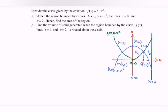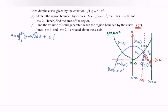Now for part B: find the volume of the solid generated when the region bounded by the curve f(x), the line x equals to 1 and x equals to 2, is rotated about the x-axis. We focus on the blue curve f(x) = 2 minus x squared. We have two sub-regions: from 1 to √2 and from √2 to 2. For volume, we must square the function. So volume equals π times the integral of (2 minus x squared)² dx from 1 to √2, plus π times the integral of (2 minus x squared)² dx from √2 to 2.